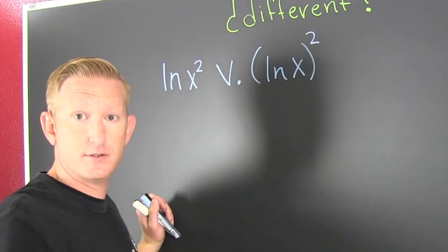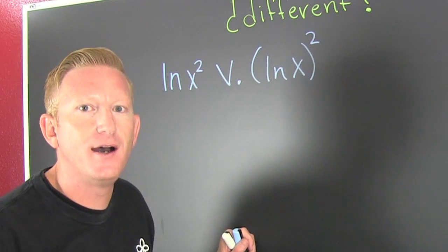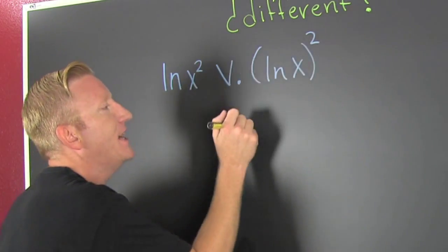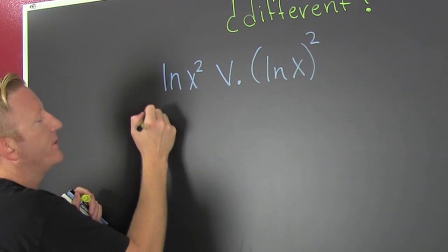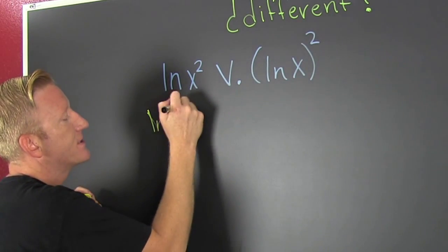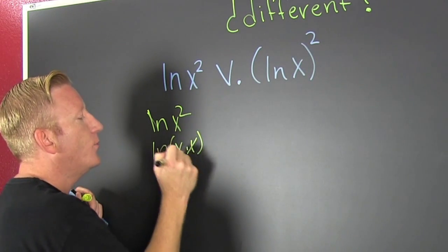I know—almost homonyms. They sound the same, but they are totally different. What am I talking about? This one over here is the natural log of x squared, which is the natural log of x times x. Then we can use the property of natural logs: the natural log of the product is the natural log of x...